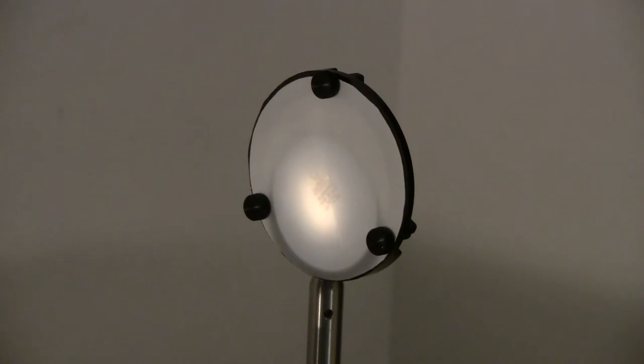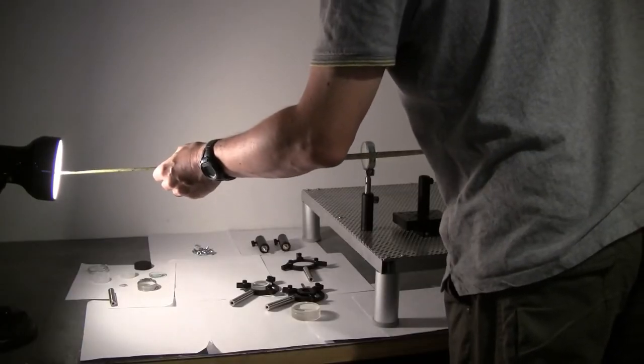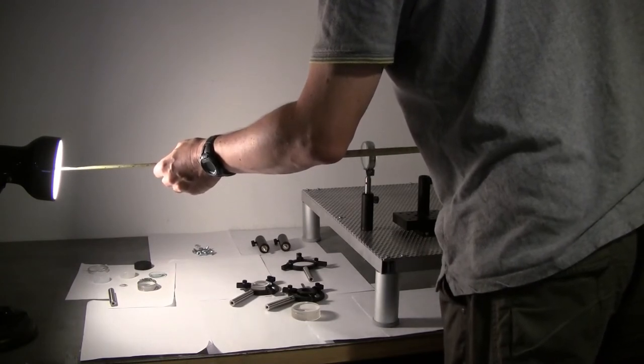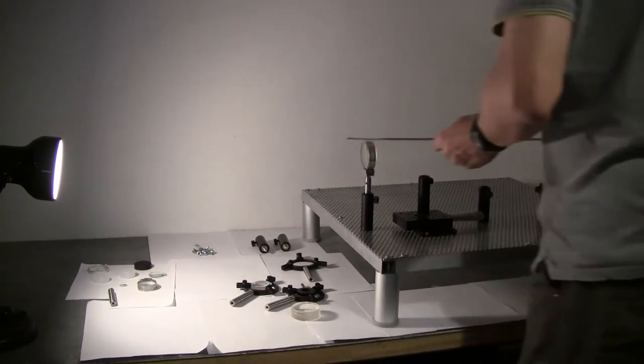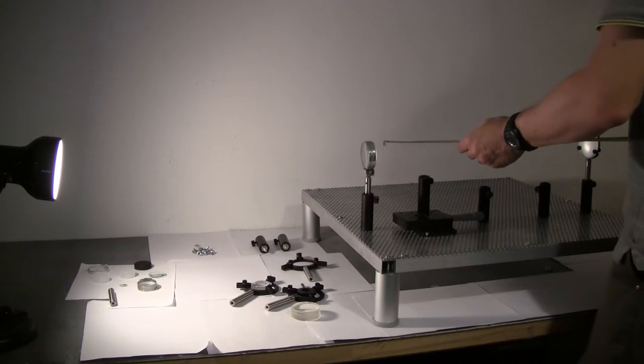Now we're just going to measure the distance between the lamp and the achromat, and then between the achromat and the viewing platform, and we'll see what numbers we get. The distance here is about 60.5 cm and the distance here is about 52.5 cm.